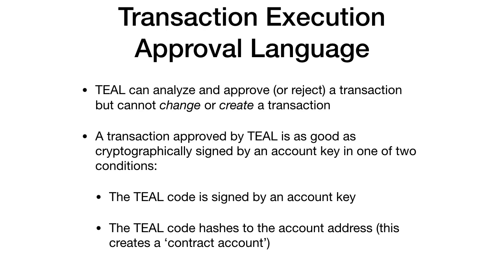A transaction approved by Teal is as good as one signed by a regular public-private key signing. This happens in one of two ways: either the Teal program is signed by a key, delegating authority for the program to authorize certain things as if that key had signed the transaction, or you can create a Teal program and use the hash of that program as the account address, creating a contract account where every transaction out of that account is governed by the program.